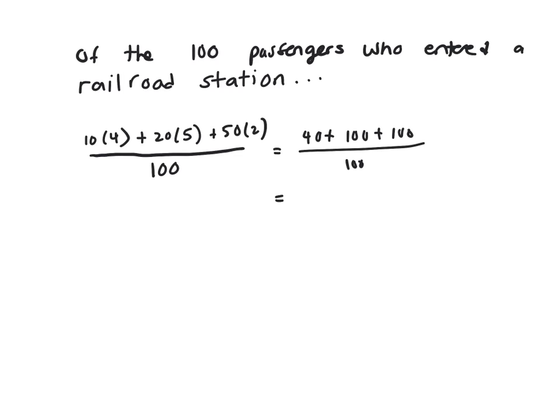Divided by 100. So 240 over 100, which gives an average of 2.4 pieces of luggage per person.